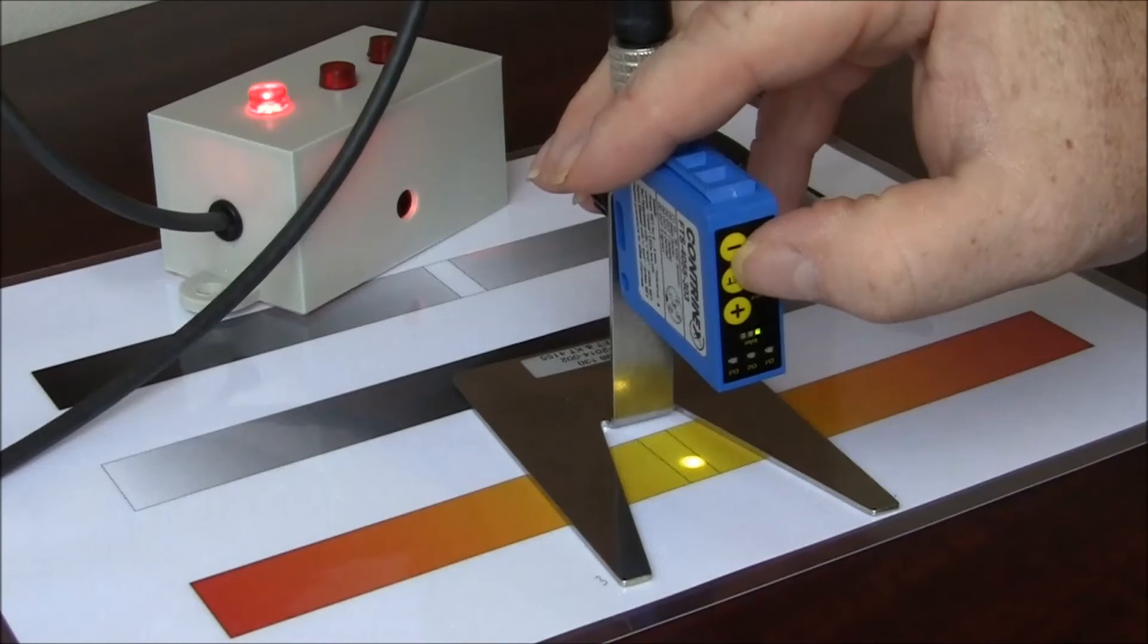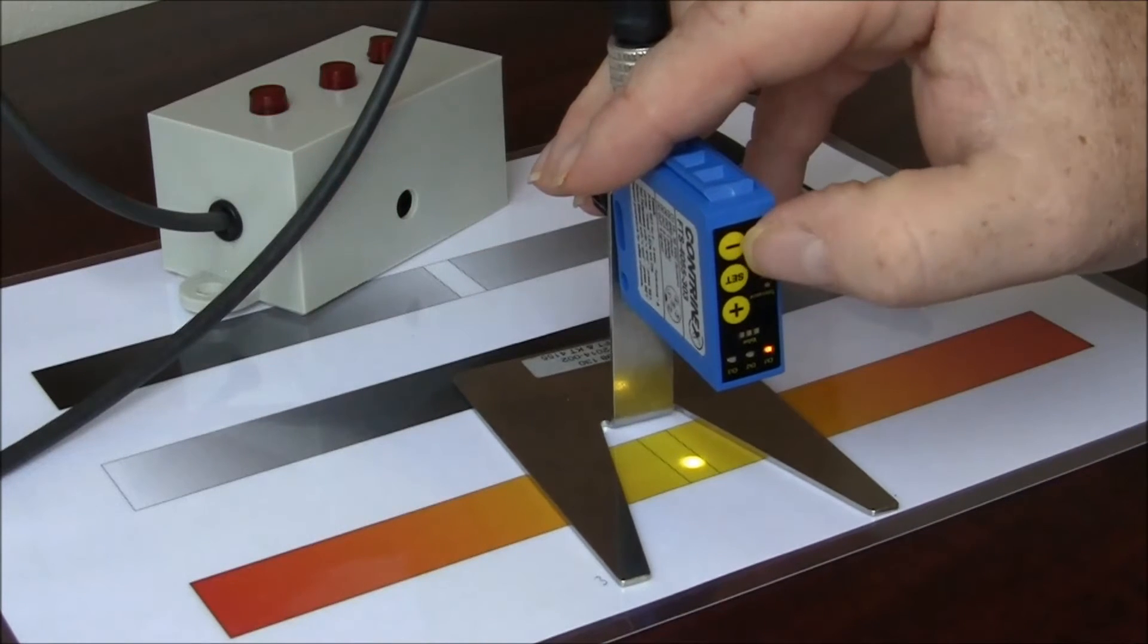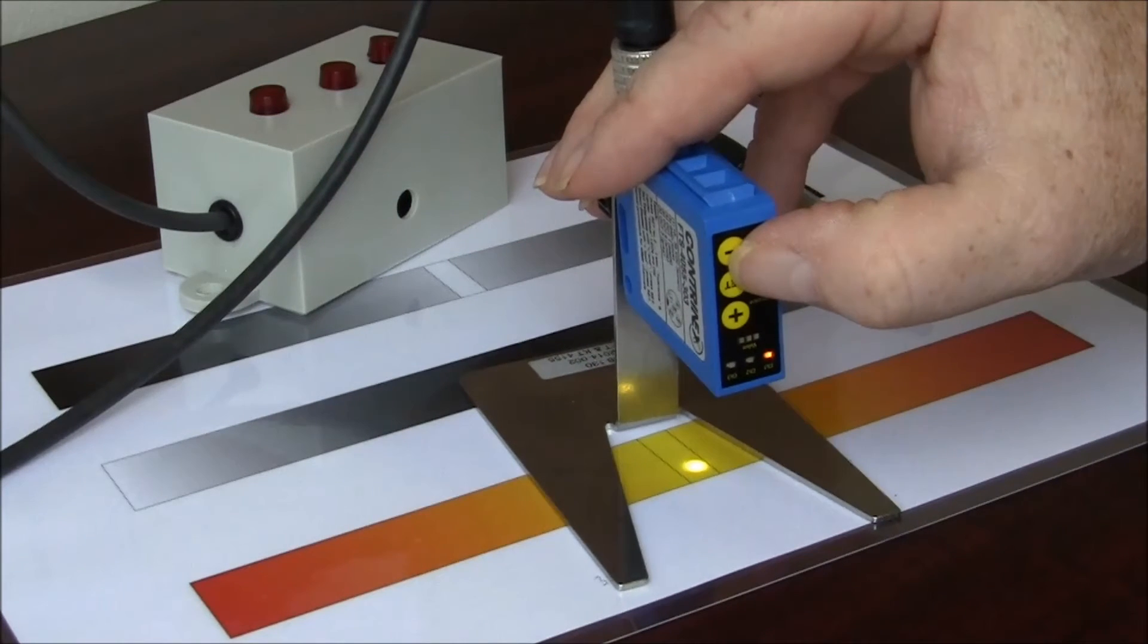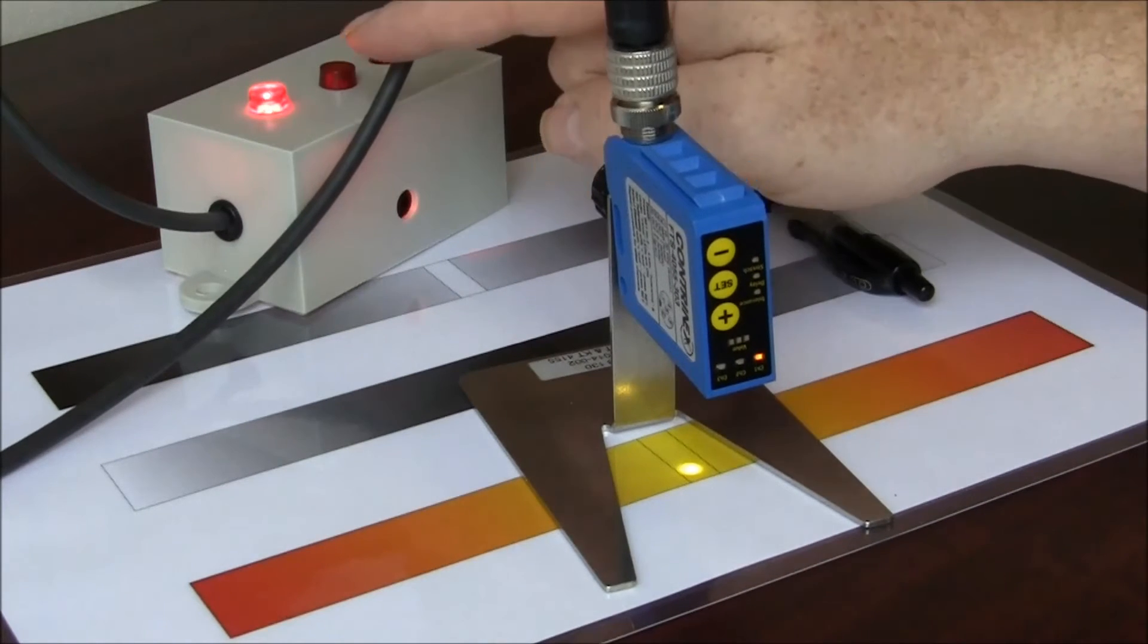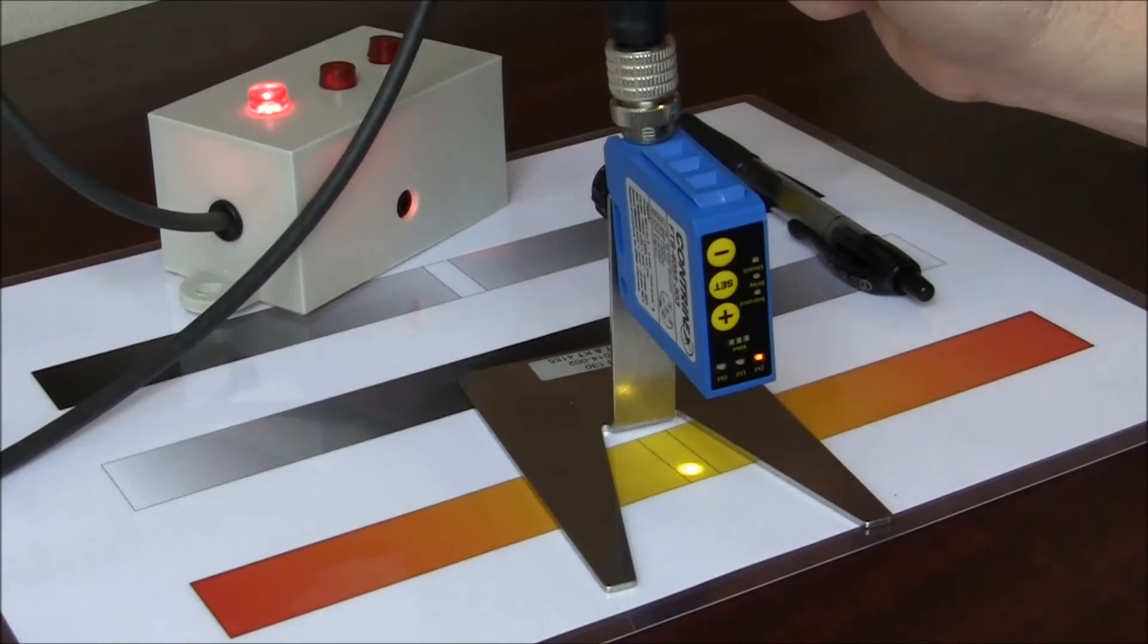And then hit the set key. And then set one more time. And you have set channel 1. And you'll notice the red indicator back here that it's outputting for channel 1.